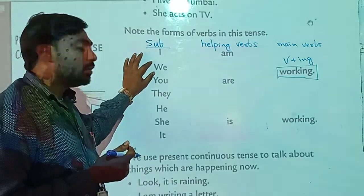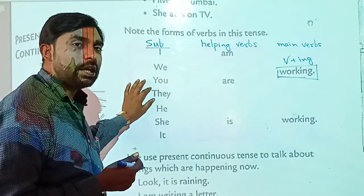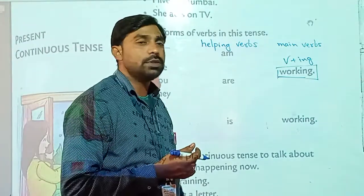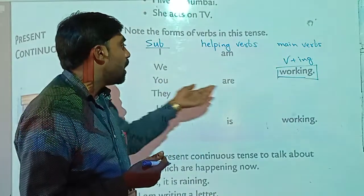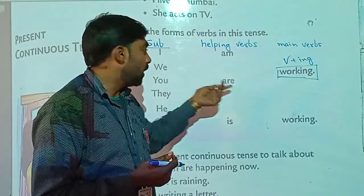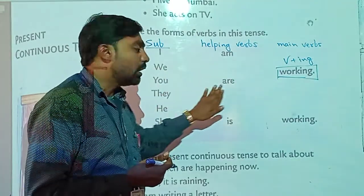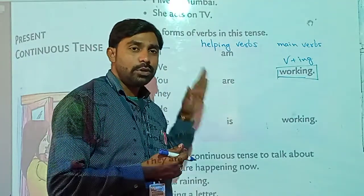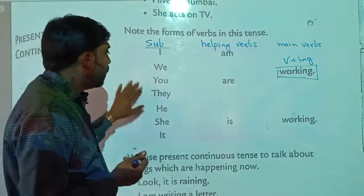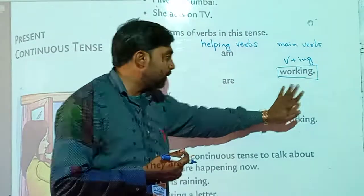With plural subjects like we, you, they, or any other plural subject, we should use ARE as the helping verb. For example: we are, you are, they are, people are. The verb will be in ING form only in present continuous tense.